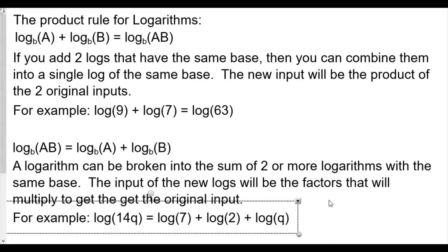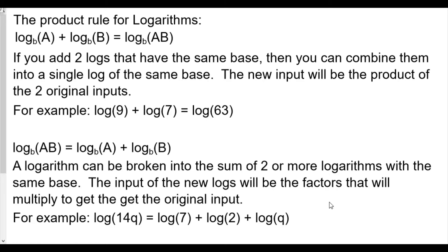If you add two logs that have the same base, you can combine them into a single log of the same base. The new input will be the product of the two original inputs. For example, log of 9 plus log of 7 equals log of 63 — we multiply the inputs: 9 times 7 is 63.